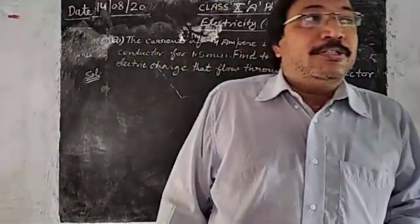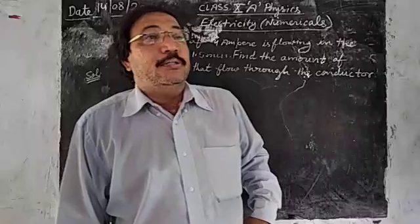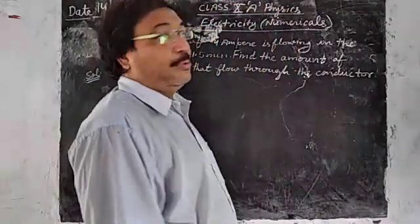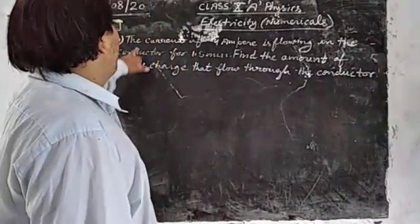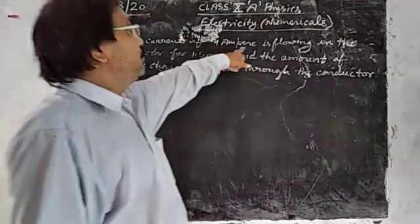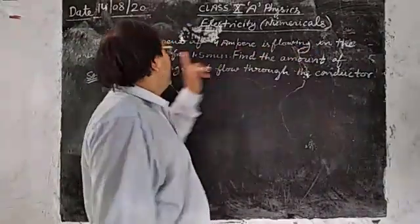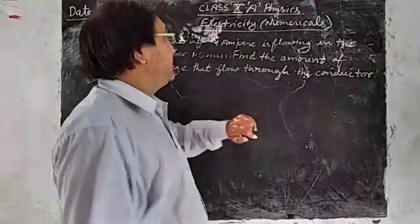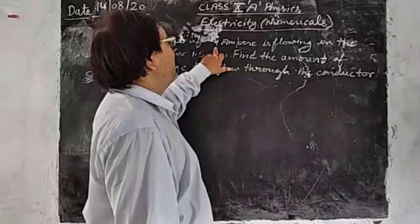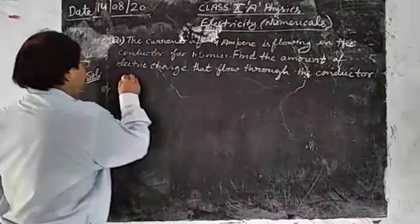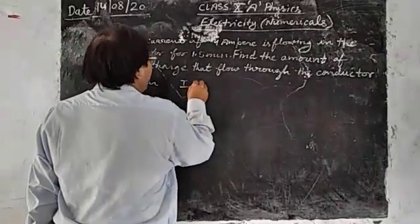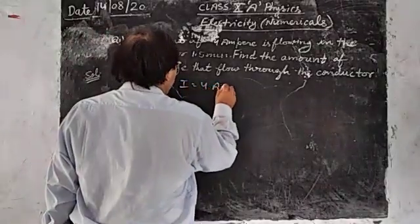We are on the chapter electricity and in this process we are doing numerical problems. Our next numerical problem is: the current of 4 amperes is flowing in the conductor for 1.5 minutes. So the current I is equal to 4 amperes.